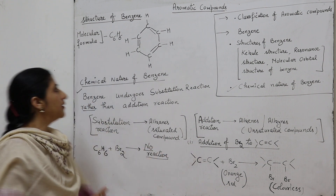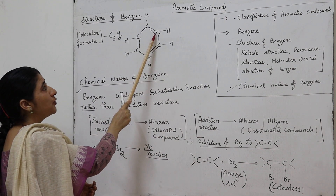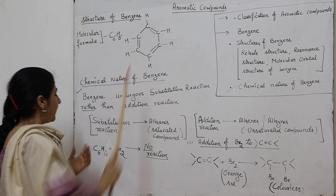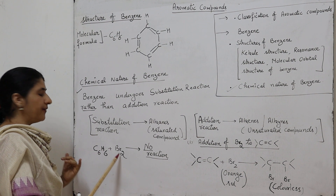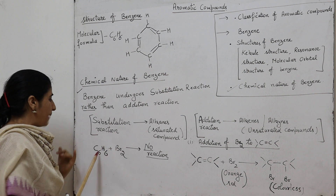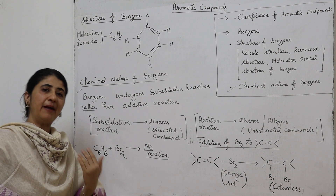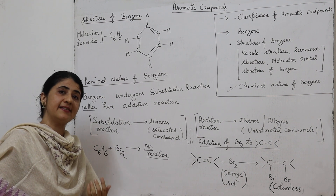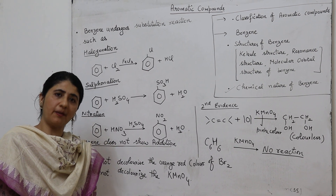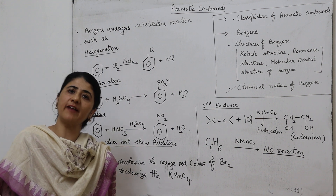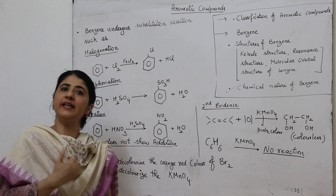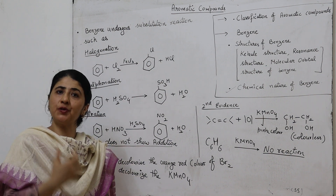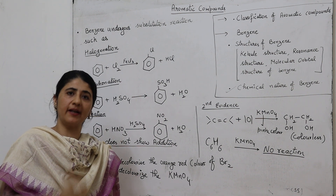When we deal with benzene, we can clearly see that benzene also contains carbon-carbon double bonds, meaning it is an unsaturated compound. So benzene should also react with bromine and show addition reactions. But benzene does not react with bromine — it does not decolorize the orange-red color of bromine. In spite of having double bonds, benzene does not react with bromine and does not decolorize it. This is the first evidence to show that benzene does not undergo addition reactions.